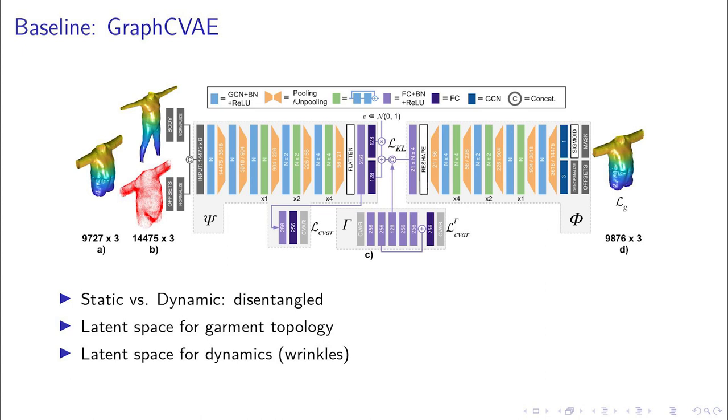Later, we train on dynamic samples. We use the previously learned static latent space as a conditional variable to explicitly disentangle garment dynamics from static features.